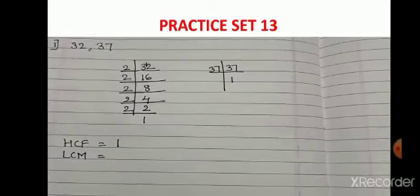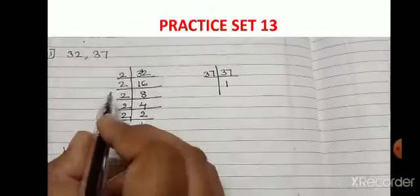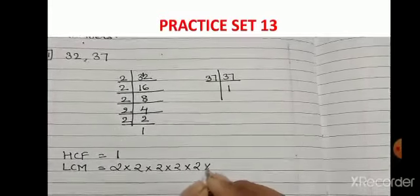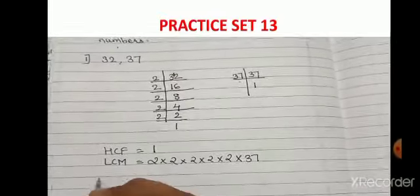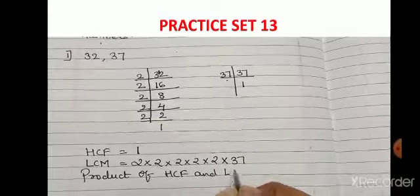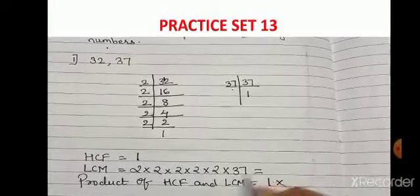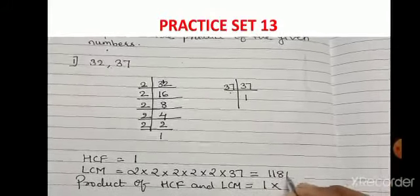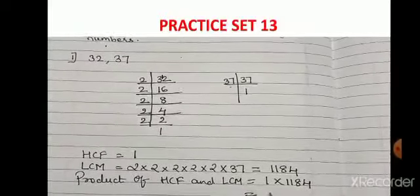The common factor is not there, but we have the uncommon factors: 2 × 2 × 2 × 2 × 2 from 32, and 37. So the LCM = 2 × 2 × 2 × 2 × 2 × 37 = 1184. Now the product of HCF and LCM is 1 × 1184 = 1184.